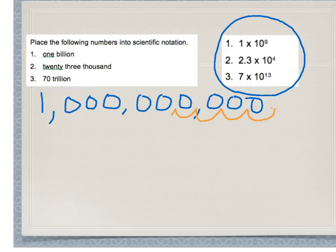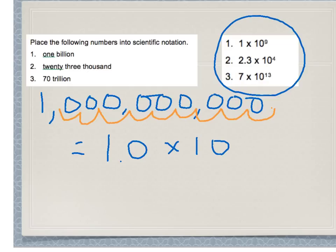We count nine decimal places and move the decimal to where it should be — between the first one and the zero. That gives me an answer of 1.0 times 10 to the 9. The exponent indicates the number of times you move the decimal point. Ten to the ninth — that's your answer.